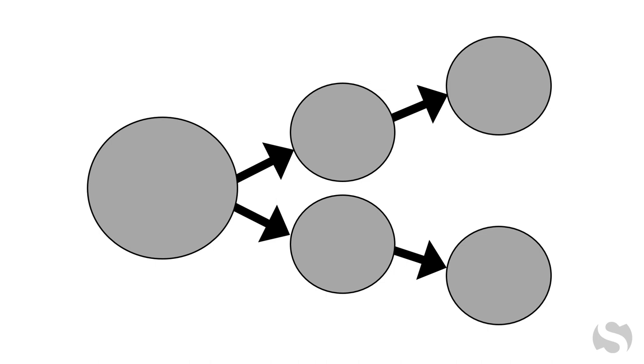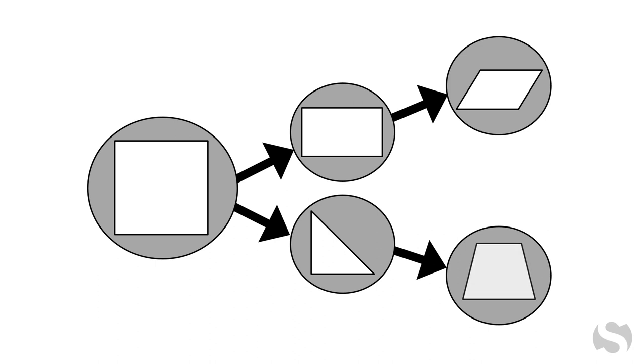For example, aspects of geometric shapes from square to rectangle to parallelogram, or square to triangle to trapezoid.